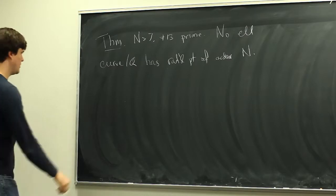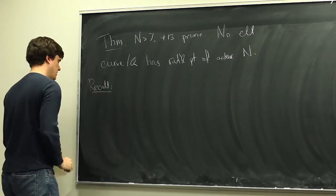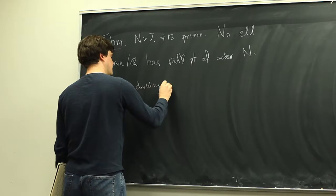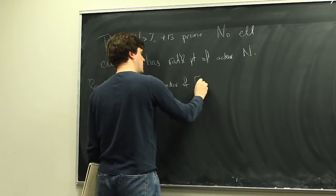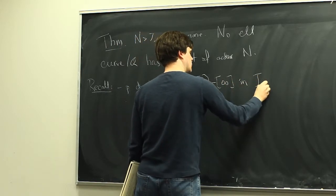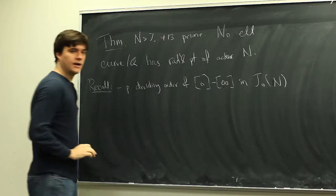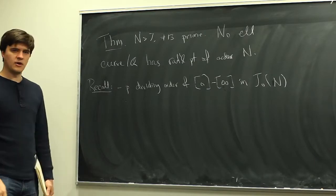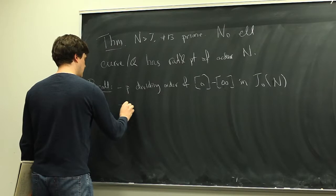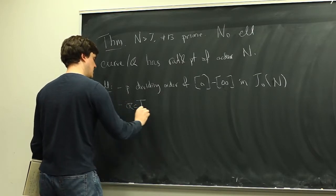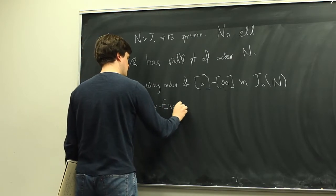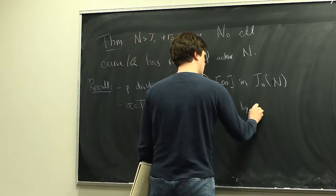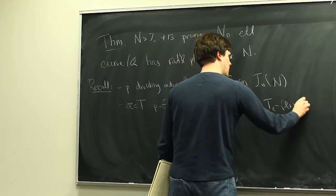We started proving this last time. We picked a prime p dividing the order of the difference of the cusps in J_0(n). We showed this was a non-trivial torsion point whose order divided n minus 1, so we can pick a prime dividing its order, and that prime will automatically not equal n. Then we defined a inside T to be the p-Eisenstein ideal, generated by p and T_l minus l plus 1 for all l not equal to n.